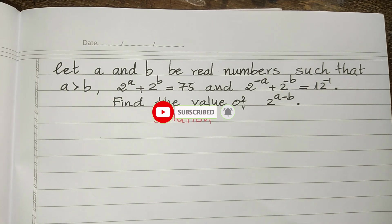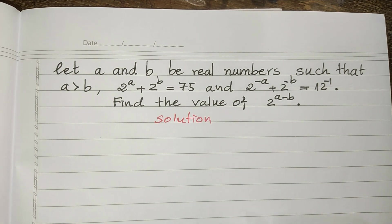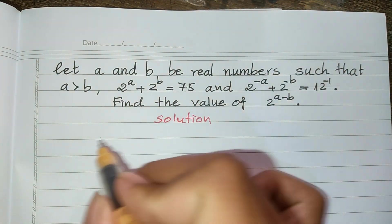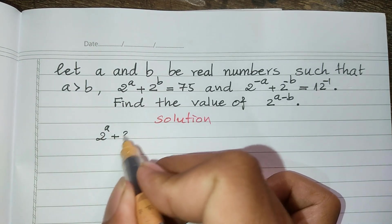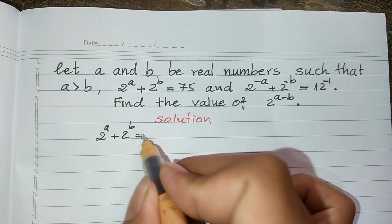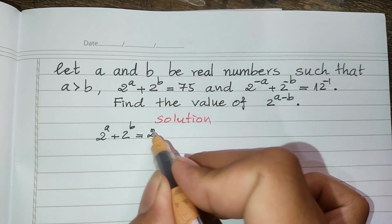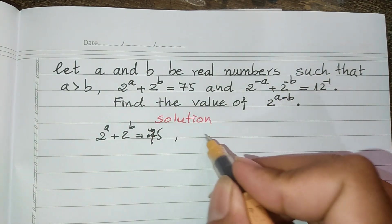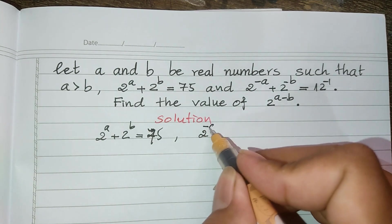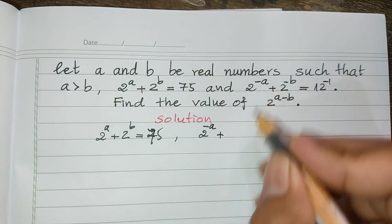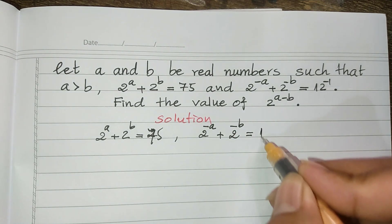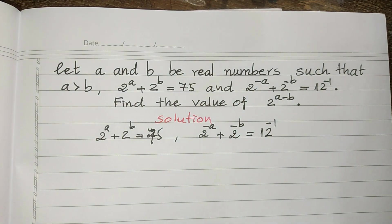Now we go to the solution together. We have: 2 to the power a plus 2 to the power b equals 75, and 2 to the power negative a plus 2 to the power negative b equals 1/12.